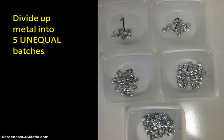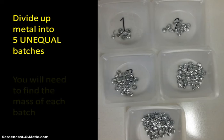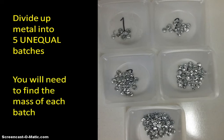The first thing you will do is divide your metal sample into five unequally sized batches. You will then need to find the mass of each batch.